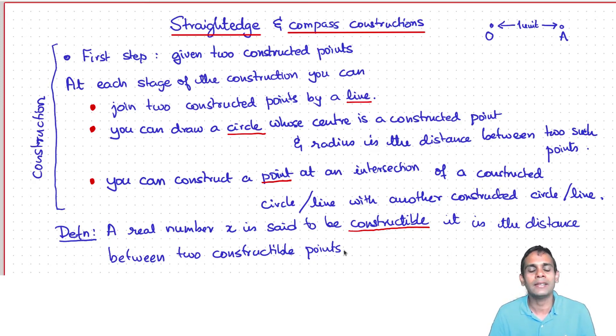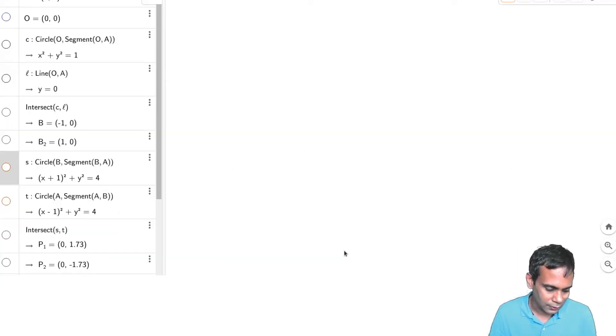Let me illustrate that the square root of 2 is a constructible real number. It's probably one of the simplest non-trivial examples. I'm going to use a package called GeoGebra to do this. It very nicely implements constructions. So we start with two points O and A and the distance between these two points is deemed to be one unit.